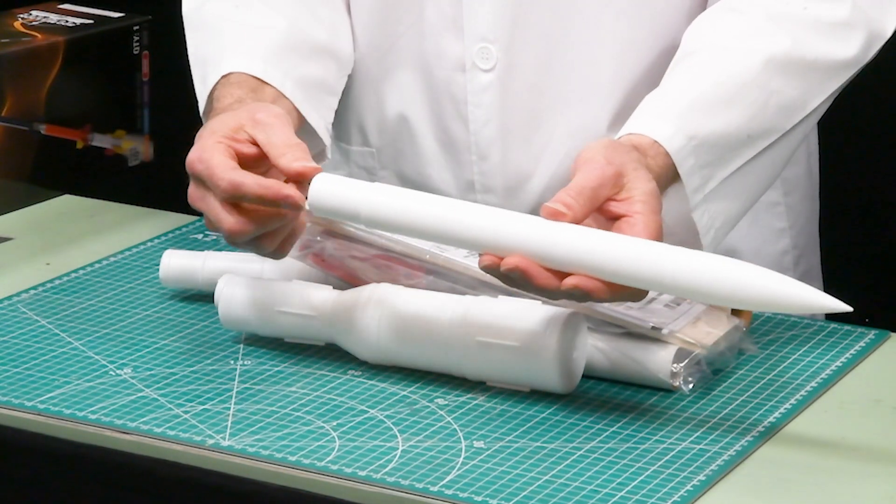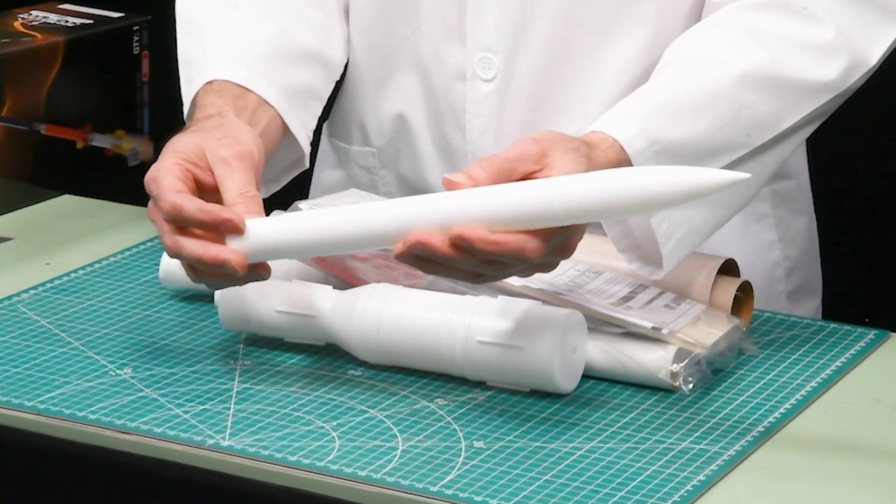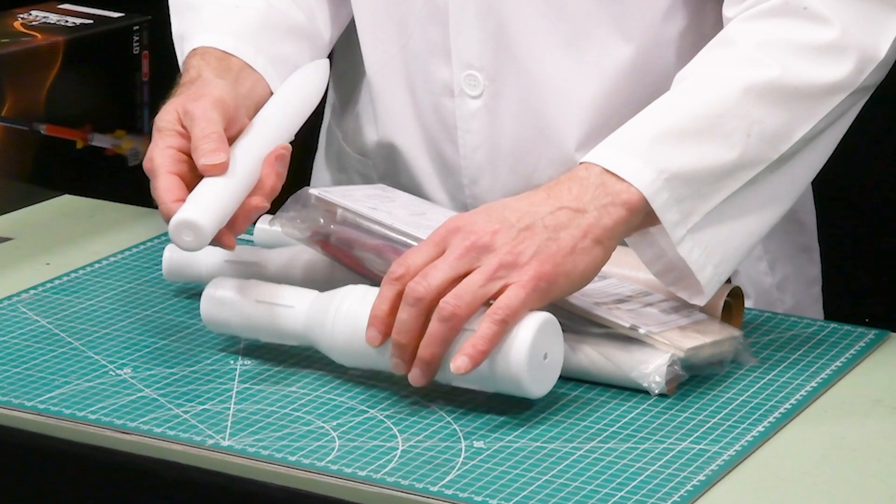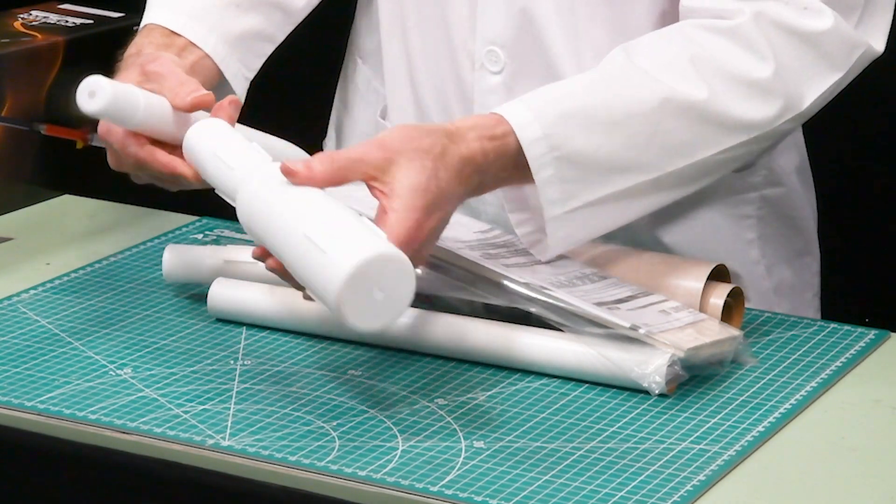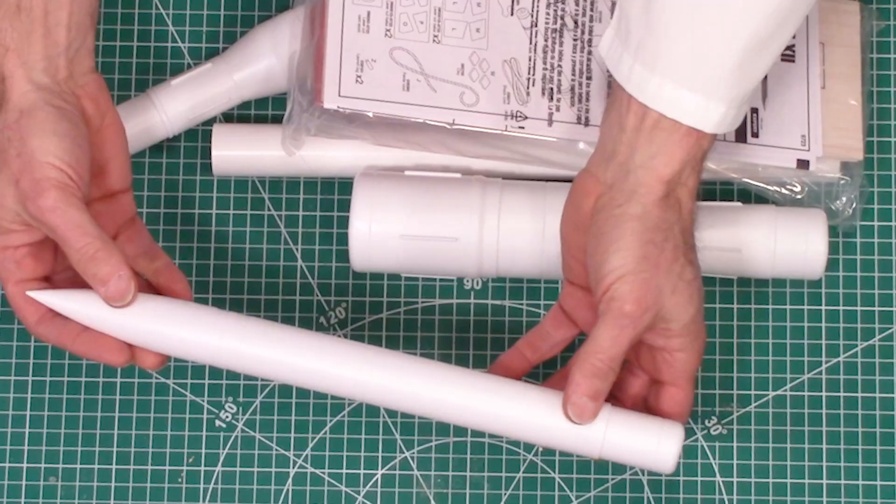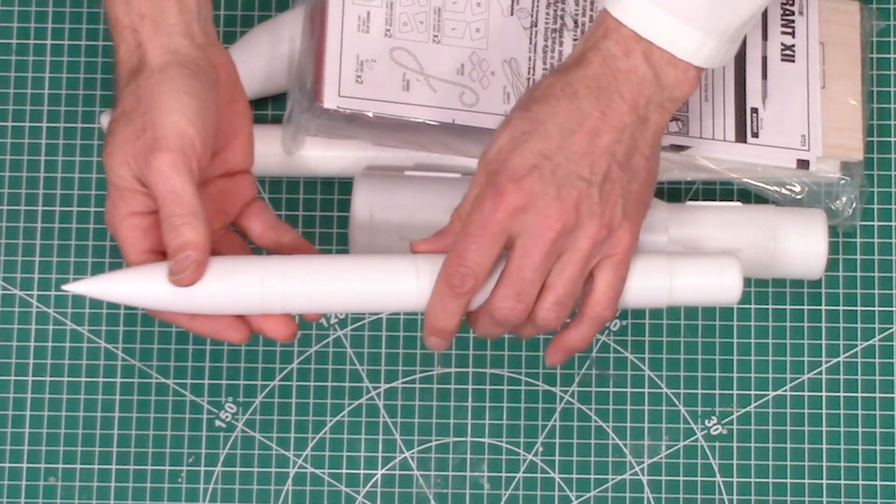It doesn't have a loop on the bottom for a parachute. Normally you could attach a parachute on the bottom. I'm looking at that one. That one doesn't have a loop either. But it's all plastic, so plastic is a little bit heavier.